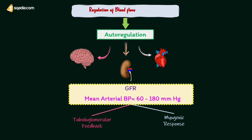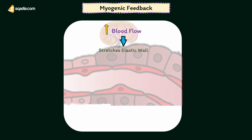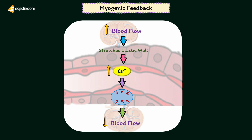Two mechanisms are involved in renal autoregulation: myogenic response and tubuloglomerular feedback. Whenever blood flow to the kidneys increases, it stretches the elastic wall of the afferent arteriole. Stretching of the vessel wall increases the flow of calcium ions from extracellular fluid into the cells. This influx of calcium ions leads to contraction of smooth muscle in the afferent arteriole, causing constriction and decreasing blood flow.